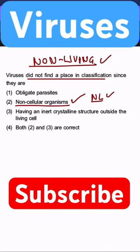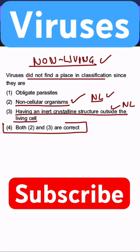Third statement: having inert crystalline structure outside the living cell. This is also known as non-living. And that's why the best answer we are going for is actually option number 4.